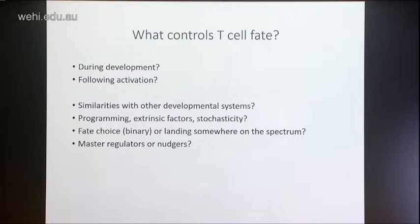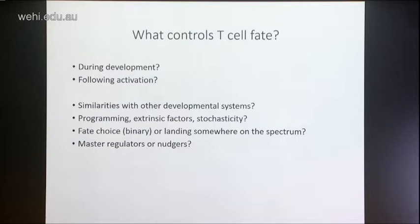One level is during development, and the other is following activation, and we'll get into the specifics of that later. I'm very interested in similarities between T-cell fate control and other developmental systems, and I'm particularly interested in understanding the balance between three different sorts of factors that dictate T-cell fate: programming — how much of the cell fate is predetermined; extrinsic factors — what comes from the outside to tell the T-cell what developmental direction it should go in; and stochasticity — what sort of random occurrences, like the balance between two transcription factors stochastically regulated within the cell, impact on the behaviour of cells as they progress along differentiation pathways.